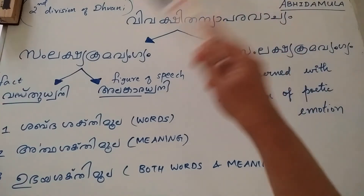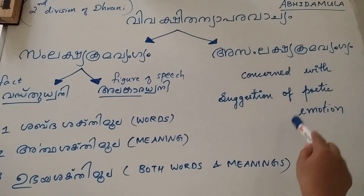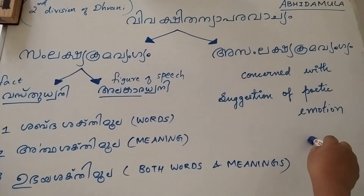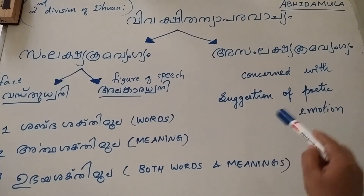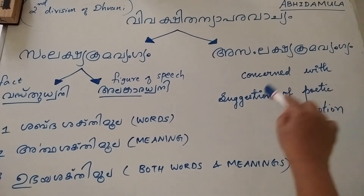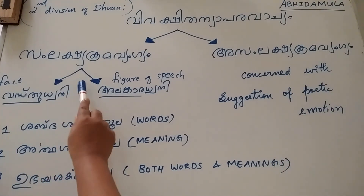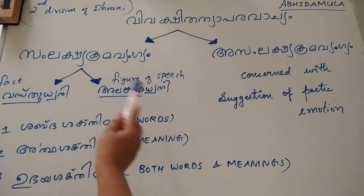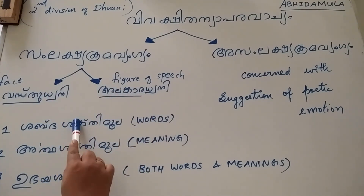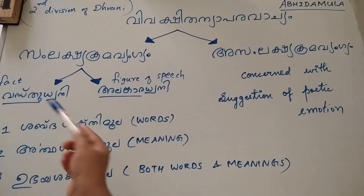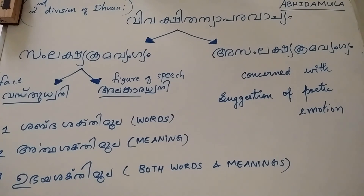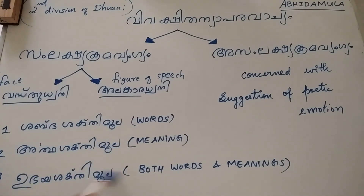We classified it into Samlakshya Krama Vangya and Asamlakshya Krama Vangya. The intermediate stages between the expressed sense and the suggested sense in Asamlakshya Krama Vangya are imperceptible. Mostly in poetry, poetic emotions are suggested through Asamlakshya Krama Vangya. The classification of Samlakshya Krama Vangya into Vastu Dhvani and Alankara Dhvani was discussed, and from another point of view, Samlakshya Krama Vangya can be divided into three: Sabda Shakti Mula, Artha Shakti Mula, and Ubhaya Shakti Mula.